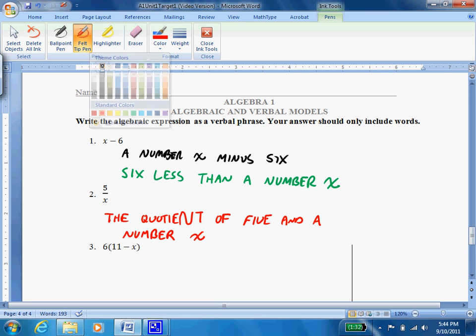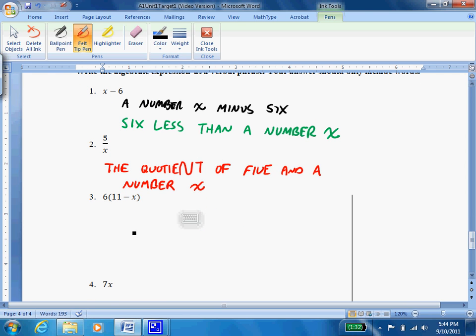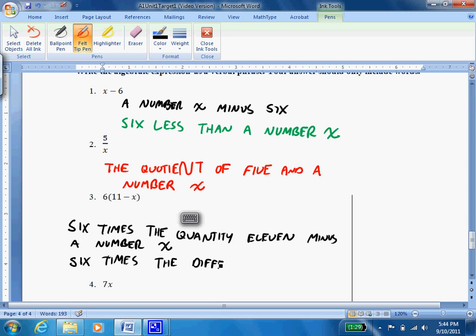Okay, final one. We have 6 and then we have 11 minus x in parentheses. So I'm going to do two different ways to write this. Either one will work. So I can either say 6 times, I can use the word quantity. So 6 times the quantity, 11 minus a number x. Or, I remember if I have groups, I can use sum, difference, product, or quotient. So since we have subtraction and we have a group, I could also say 6 times the difference of 11 and a number x.